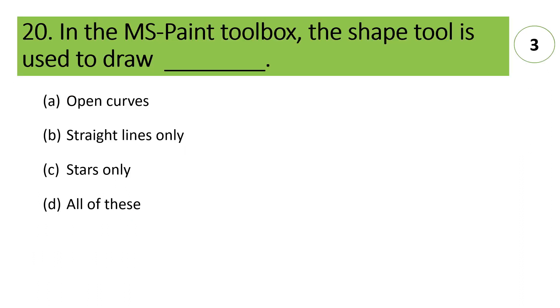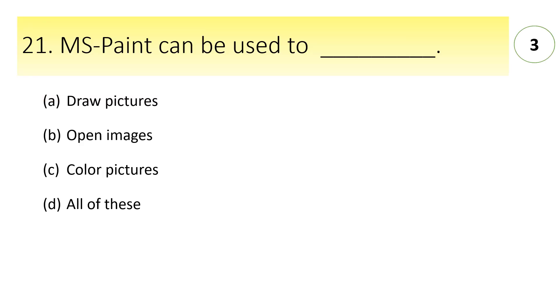In MS Paint tool box the shape tool is used to draw A. open curves, B. straight lines, C. stars, D. all of these. Answer is A. open curves. MS Paint can be used to draw pictures, open images, and color pictures. Answer is D. all of these.